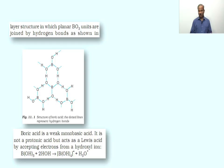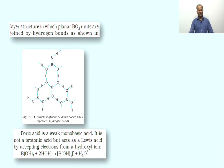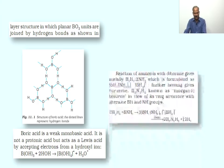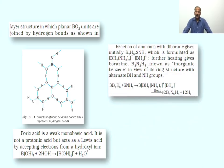Boric acid is a weak monobasic acid. It is not a protonic acid — meaning it does not release H⁺ ions when dissolved in water — but acts as a Lewis acid by accepting an electron pair from the hydroxyl of water molecules.